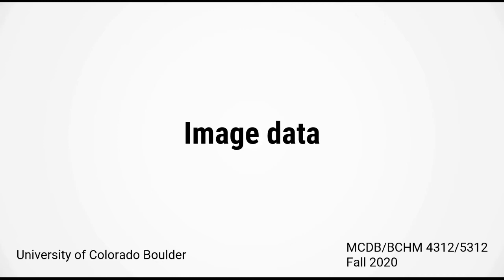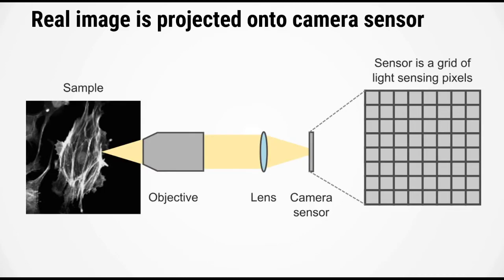Let's take a look at how images are recorded on a microscope. Images are formed on a microscope by projecting a real image onto the camera sensor.